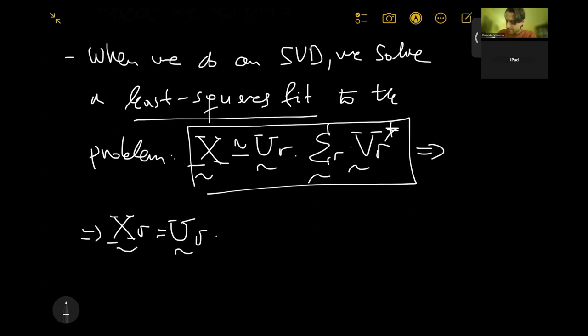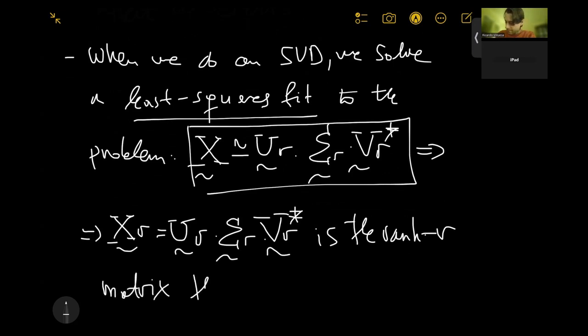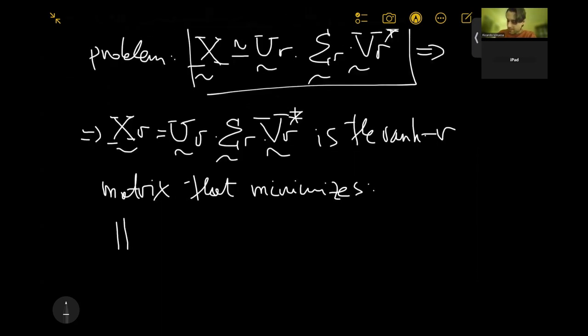So if we now denote the new matrix X_R, where X_R is not X, X_R is going to be the product of U_R sigma_R and V_R star. X_R, which is U_R times sigma_R times V_R star, is the rank R matrix that minimizes the difference.